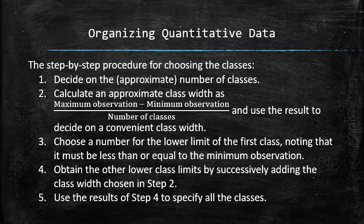Then we'll use this result to decide on the convenient class width. Then we'll choose a number for the lower limit of the first class, noting that it must be less than or equal to the minimum observation in the data set. We'll obtain the other lower class limits by successively adding the class width chosen in step 2 to the lower class limit found in step 3, and then we'll use this result to specify all the classes.